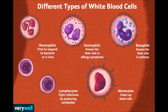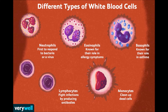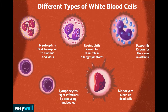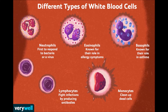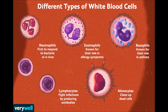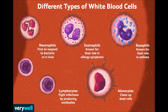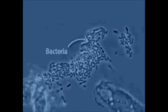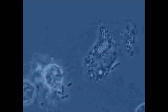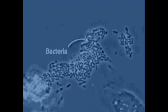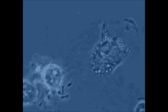White blood cells are broadly classified into two types: agranulocytes and granulocytes. Granulocytes include eosinophils, neutrophils, and basophils. WBCs are also called soldiers because they protect the body from pathogens and foreign particles. They also produce chemicals called antibodies to fight against infection and provide immunity.